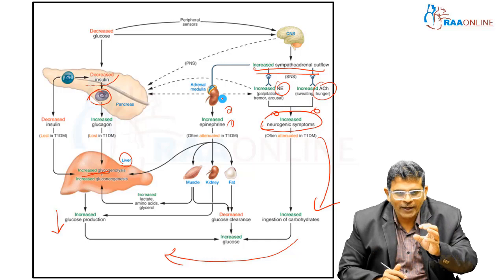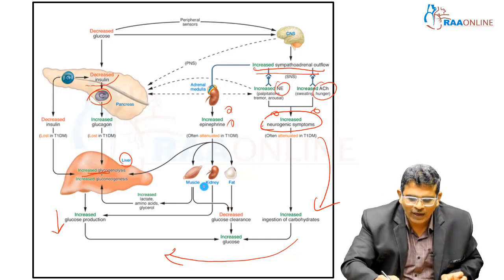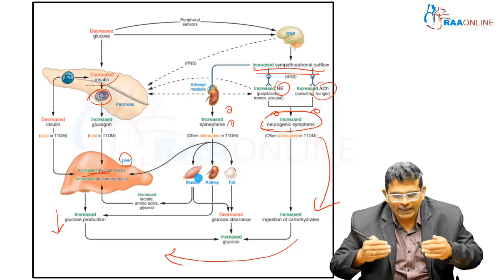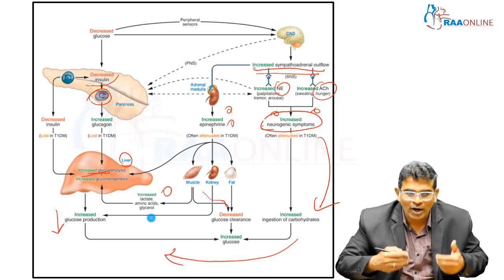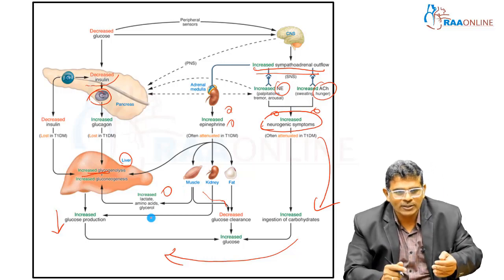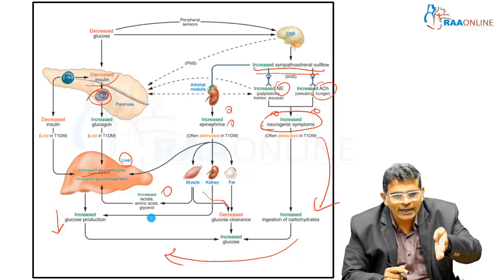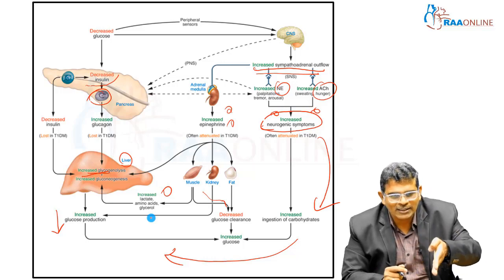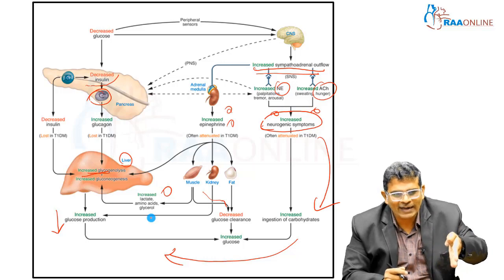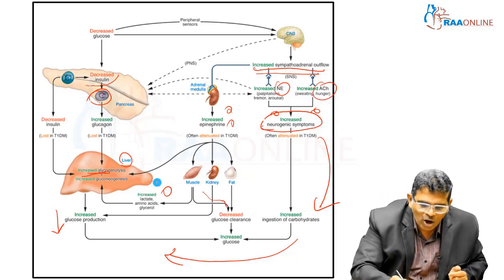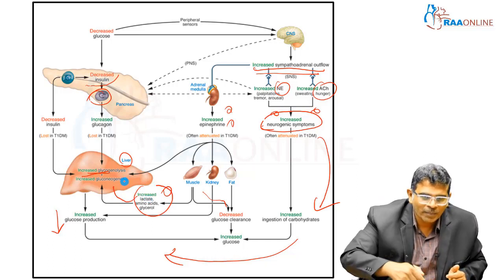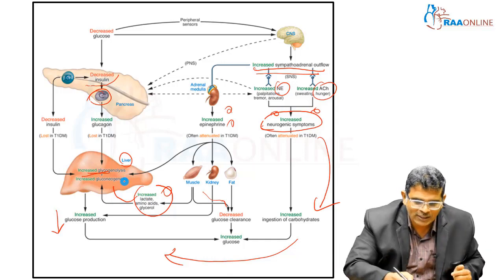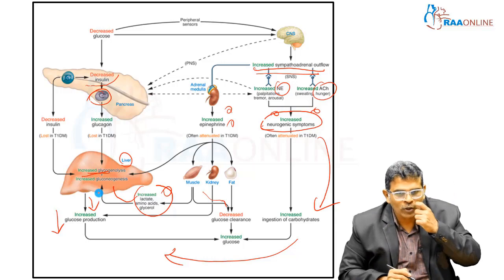Because of increased epinephrine, there is a decrease in the amount of substrates taken up by muscle, so there is decreased glucose clearance. At the same time, through anaerobic metabolism, there is increased production of lactate, increased amino acids, and increased glycerol. These alternate substrates feed into gluconeogenesis, causing increased glucose production. Epinephrine also acts on fat cells to cause decreased glucose clearance, which in turn increases glucose levels.